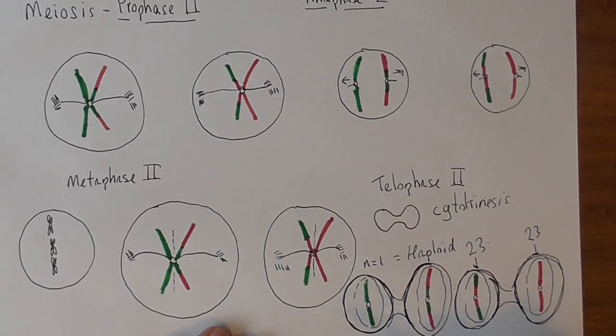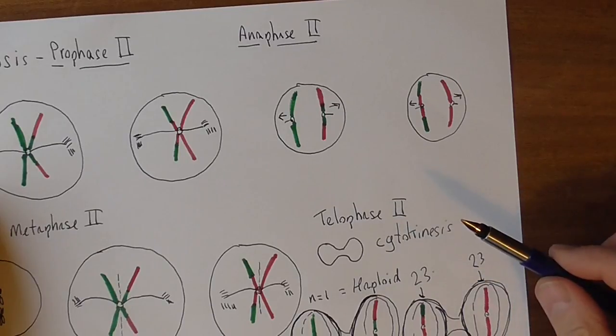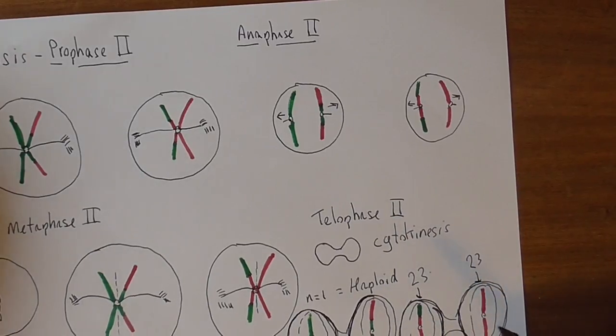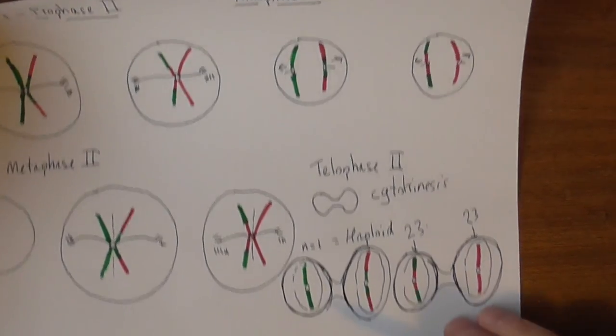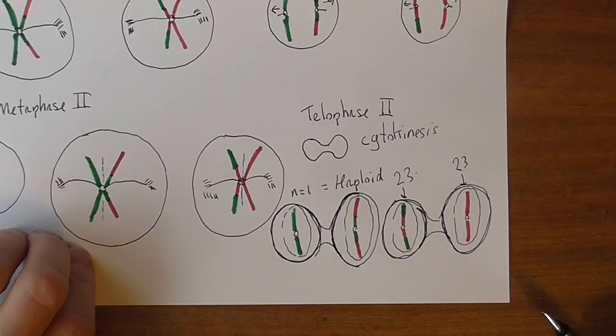Prophase 2, metaphase 2, anaphase 2, telophase 2, giving rise to the separate cells which are now ready to combine with the equivalent gamete from the opposite sex to generate a new zygote.